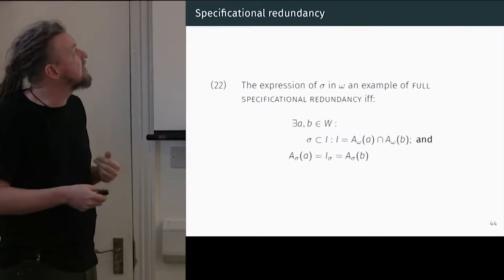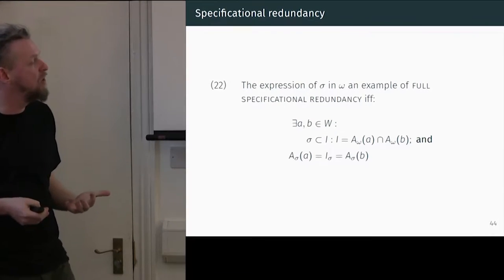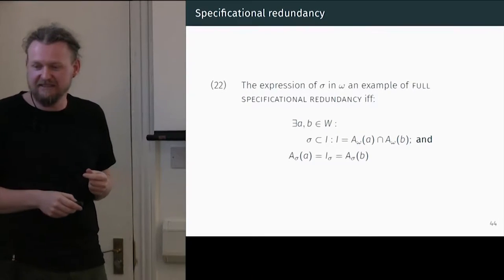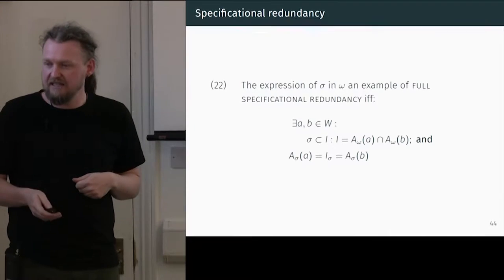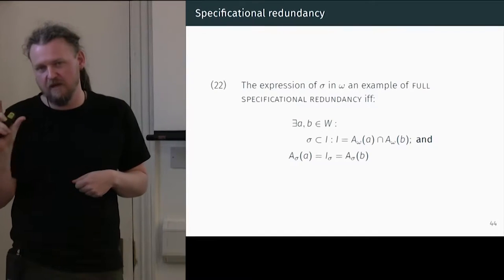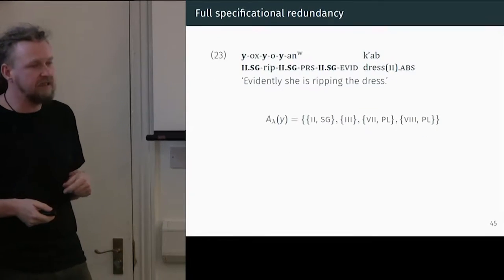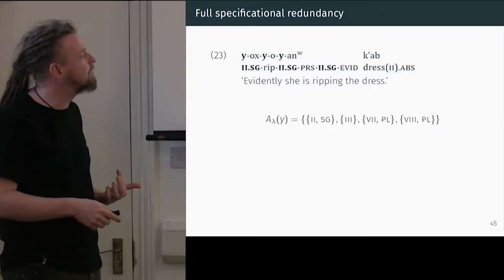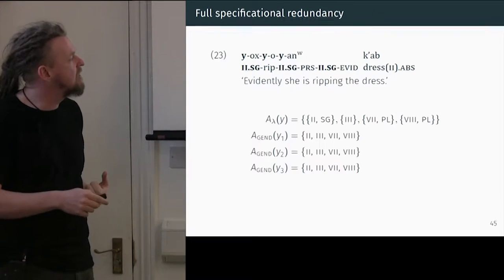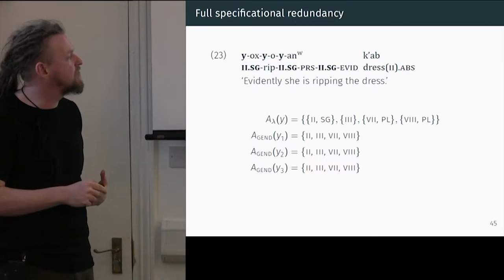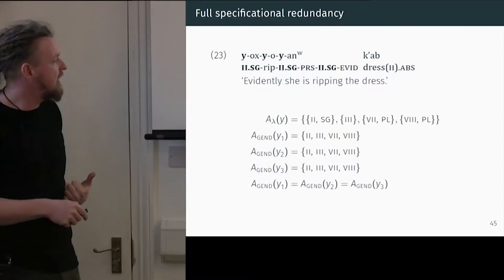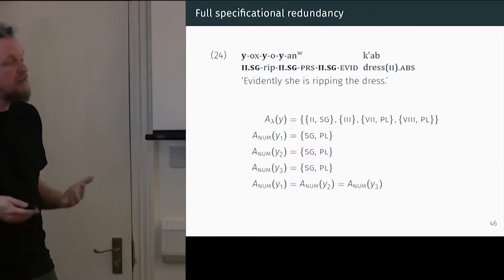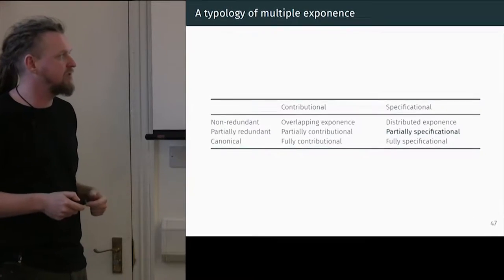The expression of some category sigma in some word omega is an example of full specificational redundancy if and only if it is multiple exponents and the A-Sigma relationships are identical — the feature sets of how certain we are are also identical. For our Batsby example, we've already demonstrated it's multiple exponents. In terms of the A-Gender association, for each one of them, since they're all equal, this is equally specificationally redundant in terms of gender. Similarly in terms of number. Partial specificational redundancy is simply multiple exponents where the set of A-Sigma relationships of one formative is a subset of another.